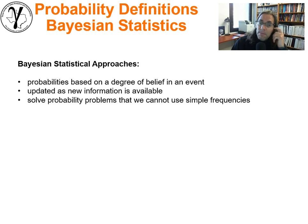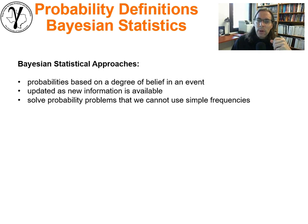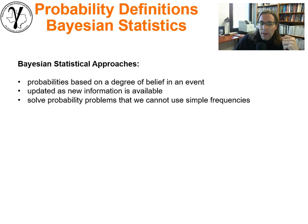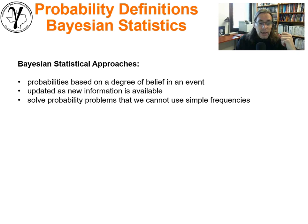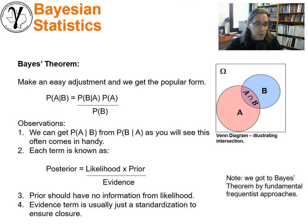Why do we want to use Bayesian methodologies in our statistics and, by extension, within our statistical or machine learning? First of all, it is more flexible than the frequentist approach. There are many classes of problems we can't solve very well with frequentist methods. Probabilities can be based on degree of belief. We are able to update with new information in a very nice manner, and so we can solve a lot of problems that frequentist approaches wouldn't quite have the methodologies to handle.